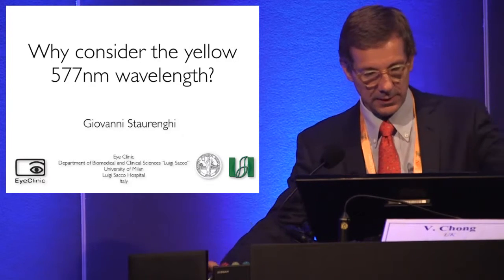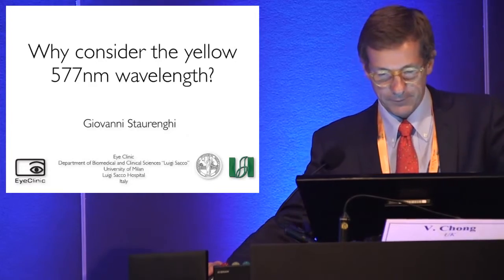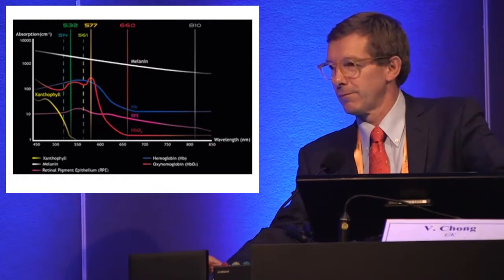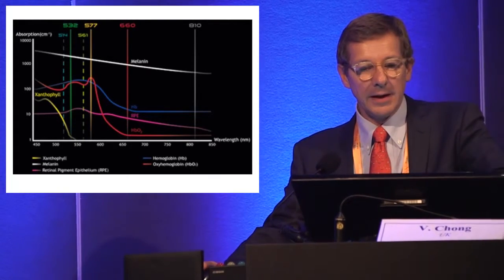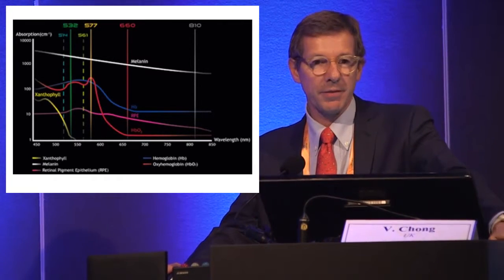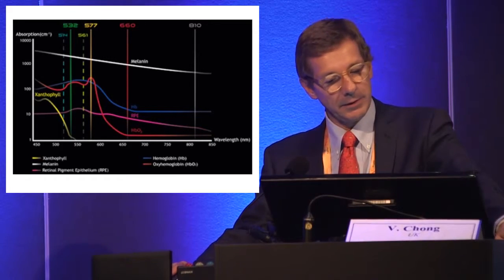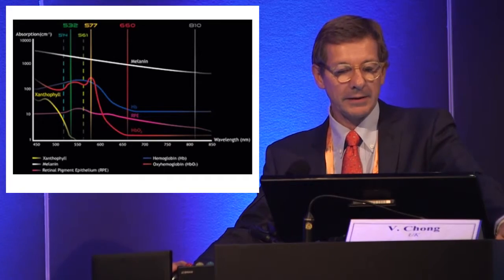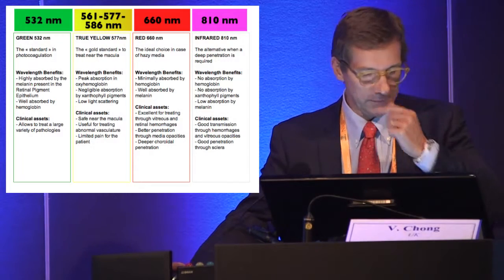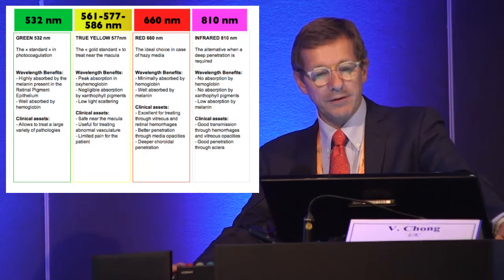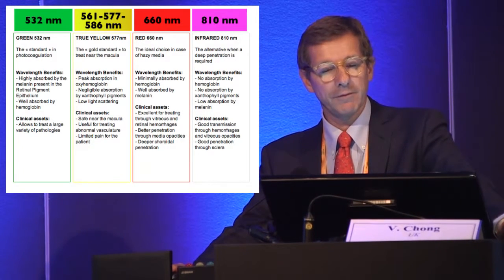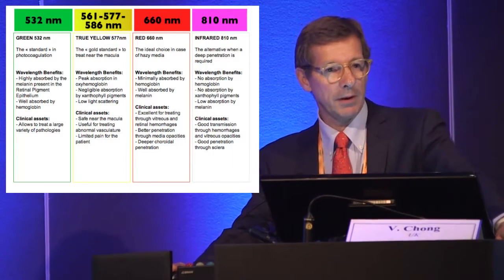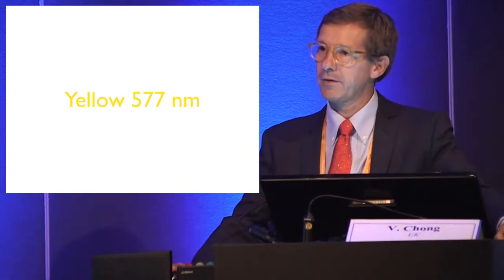Good afternoon. We have a series of possibilities to use laser, and everybody probably has experience with the argon laser at 532 nanometers. Now we also have the yellow laser, and one of its advantages is that it has the peak absorption for hemoglobin. The yellow laser ranges from 561 to 586nm, but the maximum peak for hemoglobin absorption is at 577nm, so the yellow 577 can have some advantages.